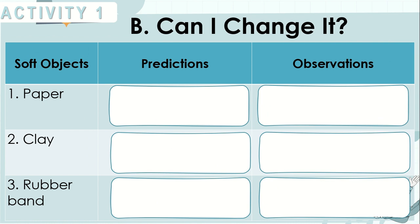For soft objects, can I change it? We have paper, clay, and rubber band. Write your predictions as well as your observations.